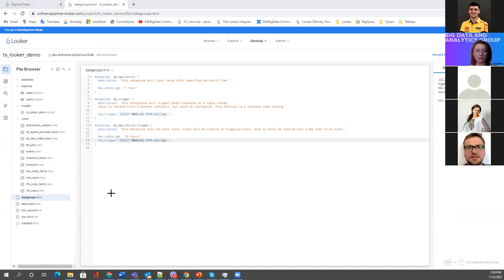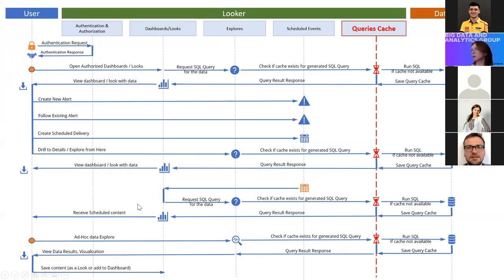Regarding persistent tables — they also need to be refreshed according to some rules. With persistent tables using only max cache age, the table is created when the first user queries data from it. It doesn't exist before that. Once created, it lives for the specified period, then is dropped and recreated only when the next user requests data from that table.